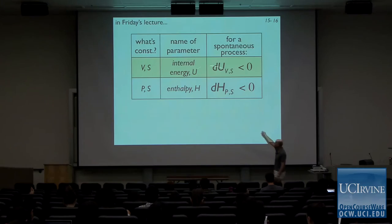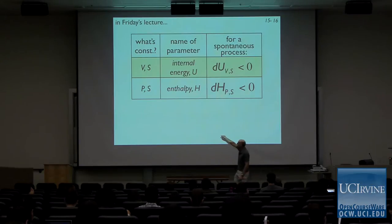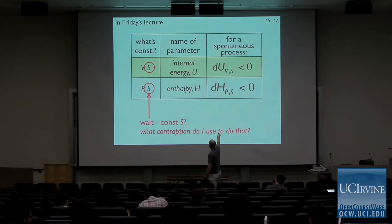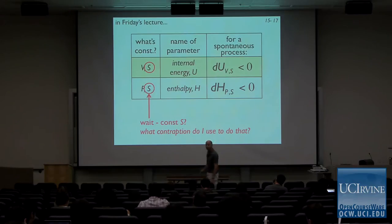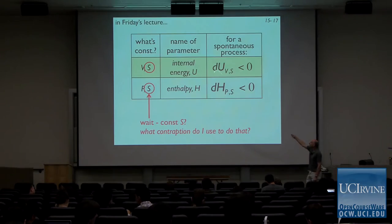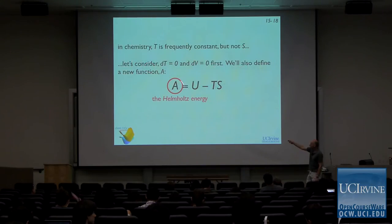Unfortunately, we don't encounter these two sets of conditions very often. It's virtually never the case that entropy is constant. How do you do an experiment with constant entropy? So when you're doing an experiment and want to understand whether the chemistry is spontaneous, it's unlikely you're going to pay attention to these two variables. They're not going to help guide your decision-making process. So we need some other state functions. We talked about one — the Helmholtz energy.